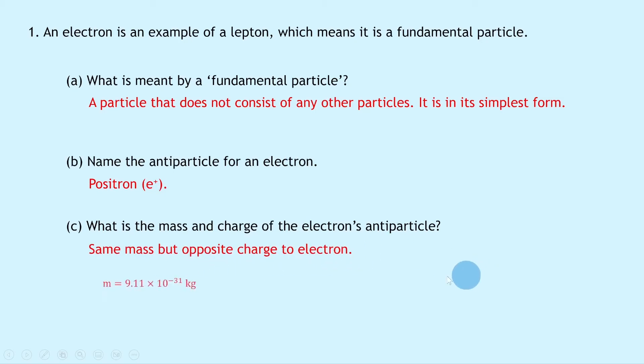So that means its mass from the data sheet will be 9.11 times 10 to the minus 31 kilograms, i.e., the mass of the electron as well. But its charge Q will be plus 1.6 times 10 to the minus 19 coulombs, rather than minus 1.6 times 10 to the minus 19 coulombs for the electron.